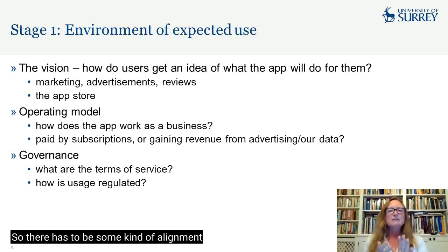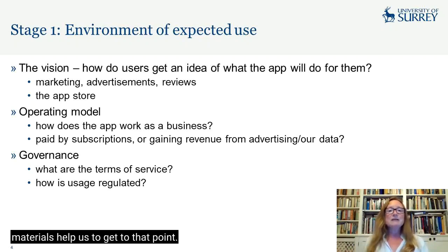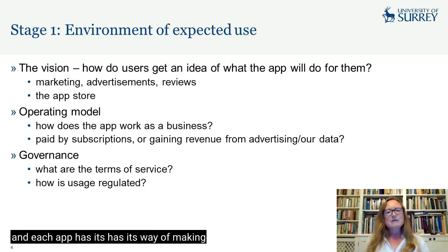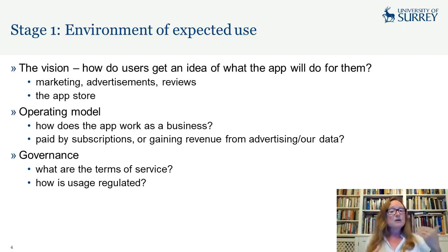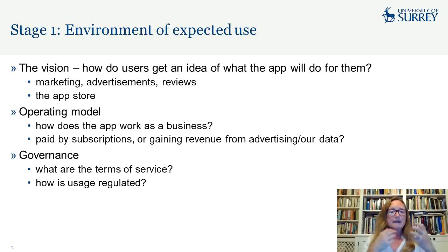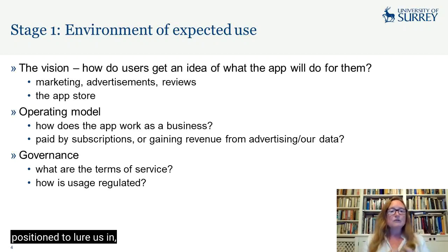There has to be some kind of alignment with us at that moment where we believe this app is for us, and these prior materials help us to get to that point. But then behind the scenes there's the operating model — the way that the app works as a business. Each app has its way of making money, and that might be through subscriptions where we actually pay to use an app or where we make in-app purchases.